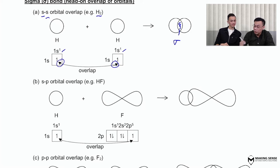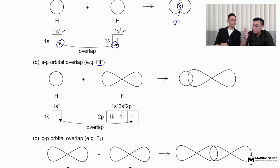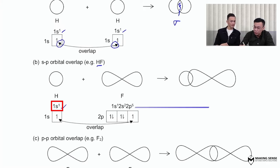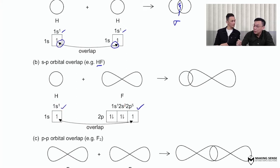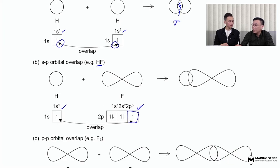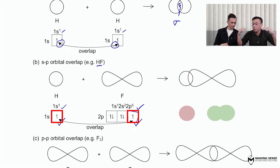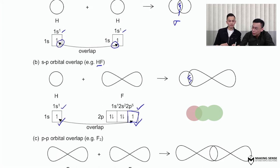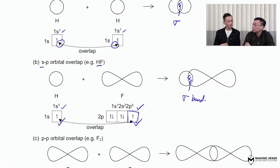Let's look at the HF molecule. The electronic configuration of the H atom is 1s1. Fluorine has nine electrons, so the electronic configuration is shown on the screen. The focus is on the valence orbital — the outermost orbital — because the outermost electrons are the ones involved in bonding. One of the p orbitals of fluorine has an unpaired electron, so that orbital will overlap with the s orbital of hydrogen via a head-on car crash, forming a region of overlap known as the sigma bond. This sigma bond is formed between an s orbital and a p orbital — what we call an sp orbital overlap.